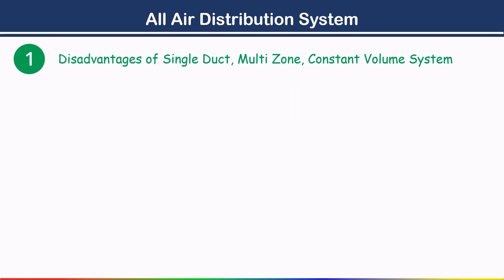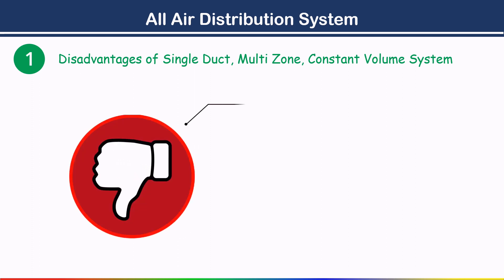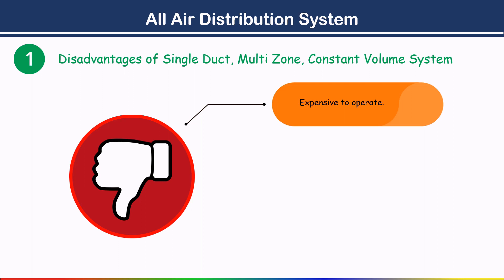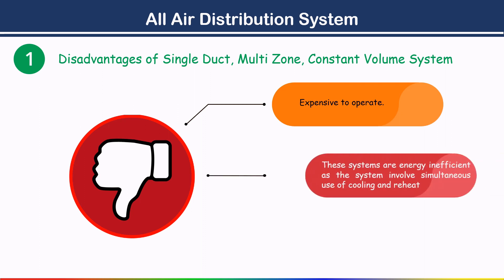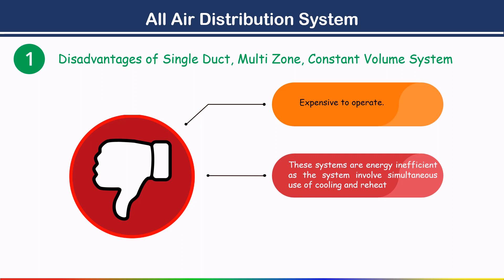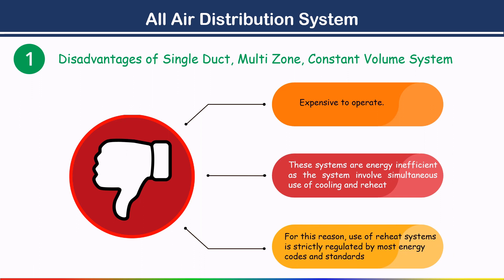Disadvantages of the single duct multi-zone constant volume system: first, it is expensive to operate compared to the single zone system. Second, these systems are energy inefficient as they involve simultaneous use of cooling and reheat. For this reason, use of reheat systems is strictly regulated by most energy codes and standards.